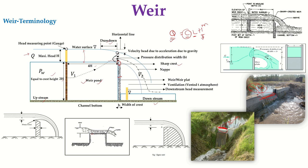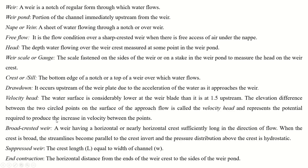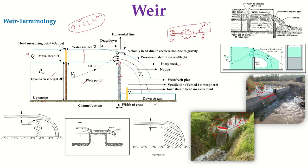Construction of your weir depends on three parameters: the canal or channel width, the amount of water stored on the upstream side depending on rainfall or irrigation conditions, and the volume of water flowing over the crest. The nappy — that is, the sheet of water flowing through a weir — is created due to the sharp crest. The nappy helps in analyzing whether flow is in free fall or submerged condition.